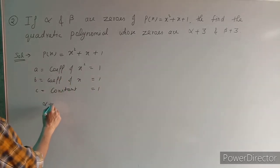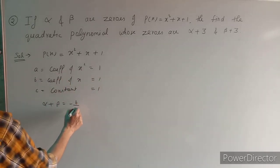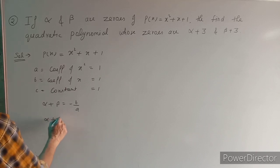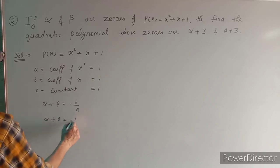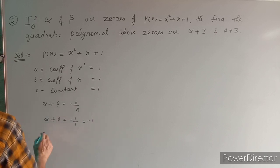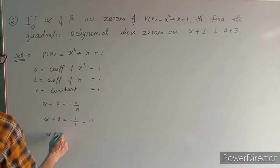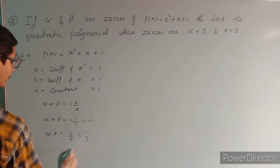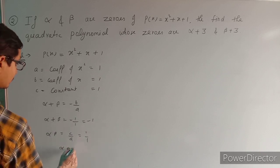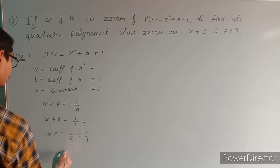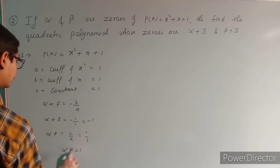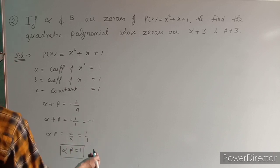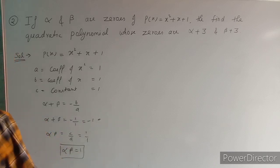Alpha + beta = -b/a = -1/1 = -1. Alpha × beta = c/a = 1/1 = 1.